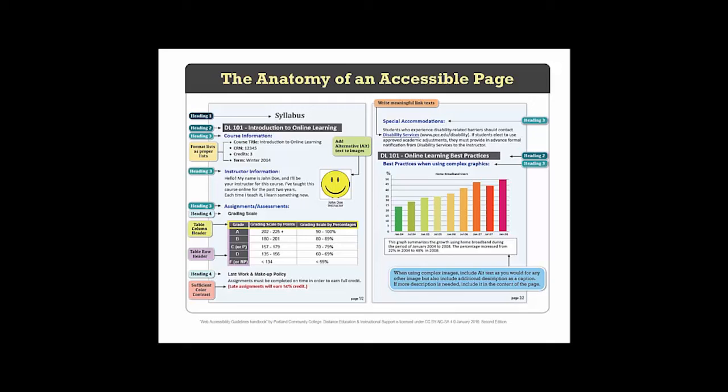We have this wonderful infographic that Portland Community College has graciously allowed us to use — it is the anatomy of an accessible page. This is a simple syllabus, a Word document, and as you can see, it is broken down into components that need to be addressed when creating an accessible file. When creating a Word document, you want to use the styles and the built-in tools available in Microsoft Word. We will cover each component on how to make an accessible page in our live demonstration. Thank you for joining us, and if you have any questions, please feel free to reach out to your instructional designer or anyone here at COLT. Thank you.